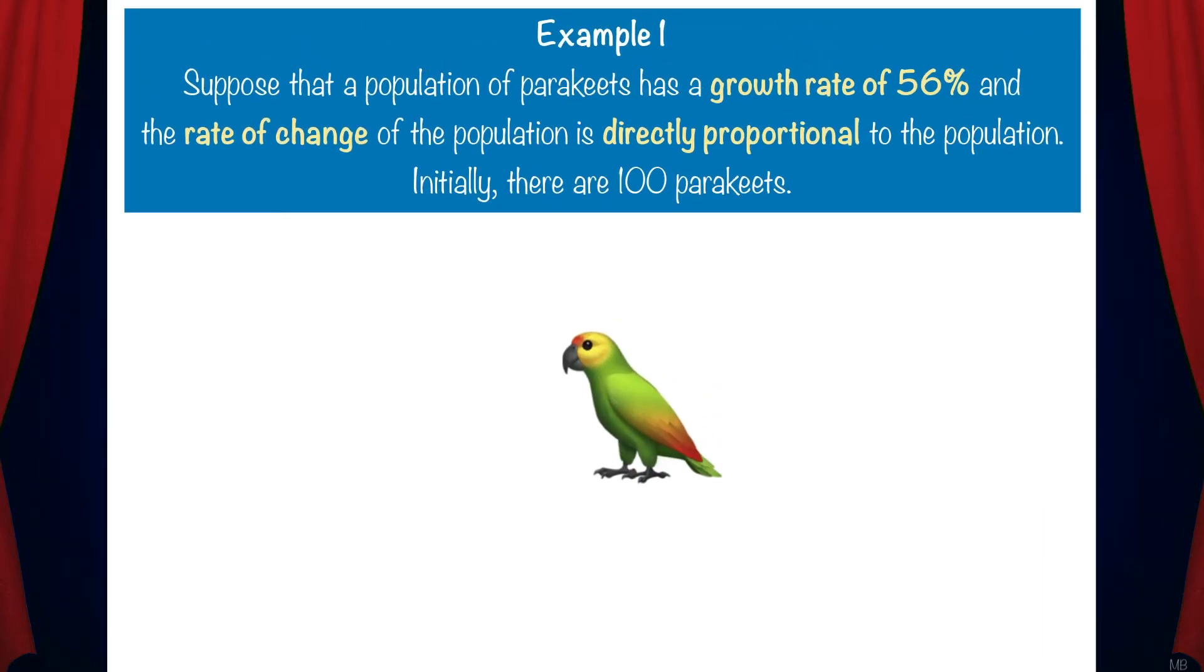Suppose that a population of parakeets has a growth rate of 56% and the rate of change of the population is directly proportional to the population. Initially there are 100 parakeets.